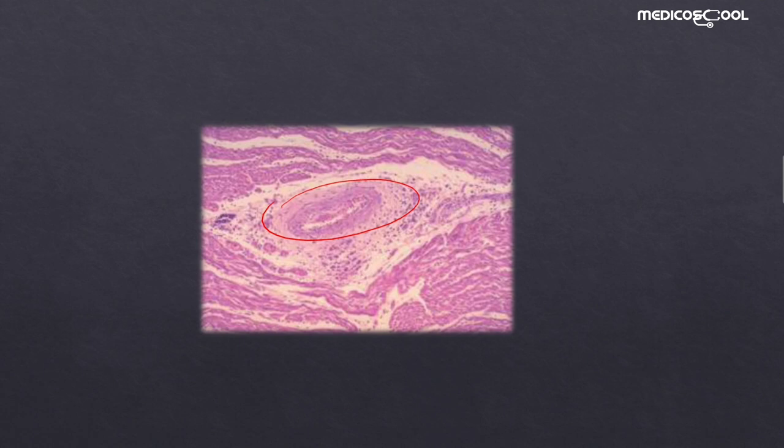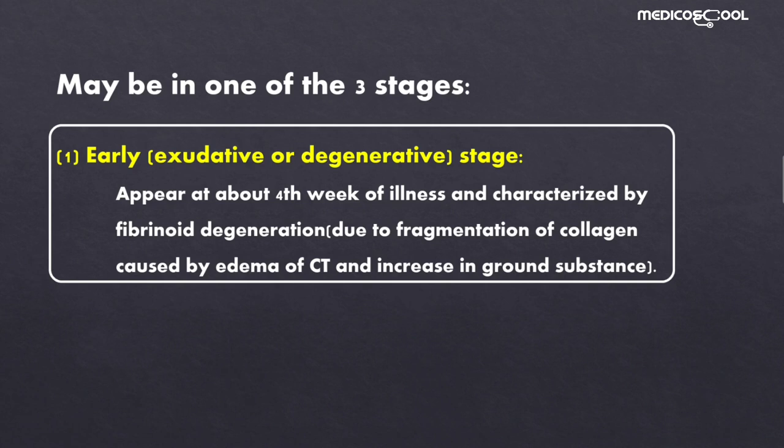Aschoff bodies or Aschoff nodules can exist in three forms: the early form, the intermediate form, and the late form. The early form is known as the exudative or degenerative stage, and it appears at about the fourth week of illness.